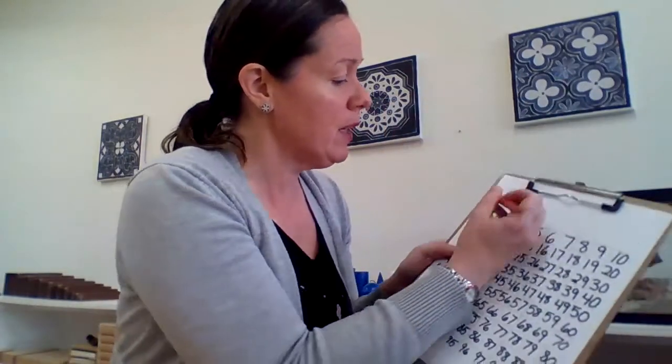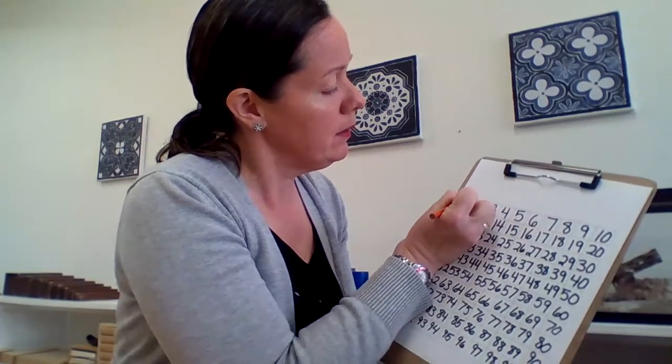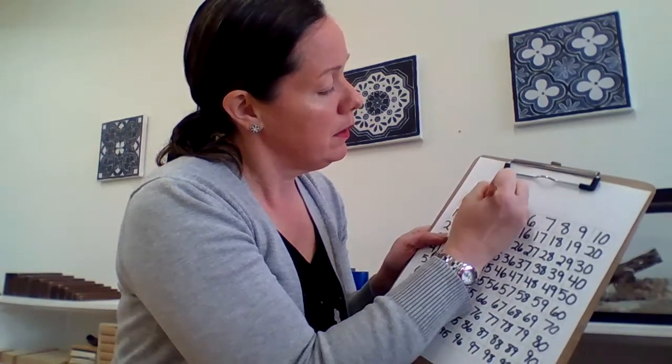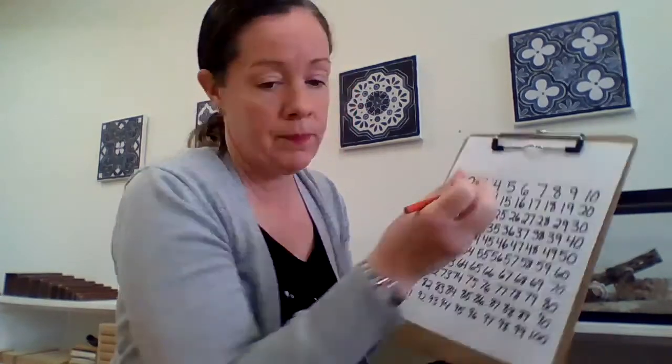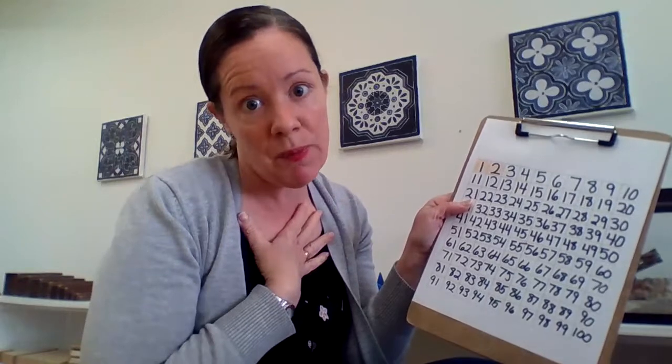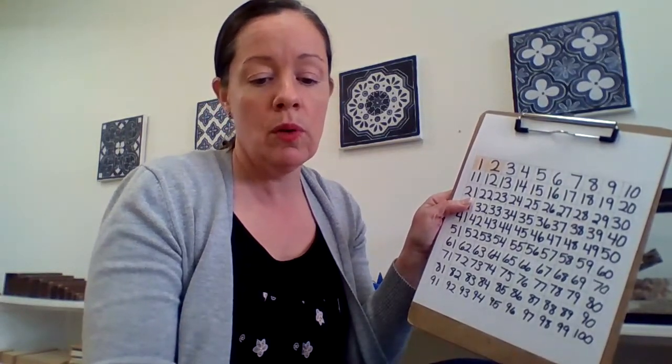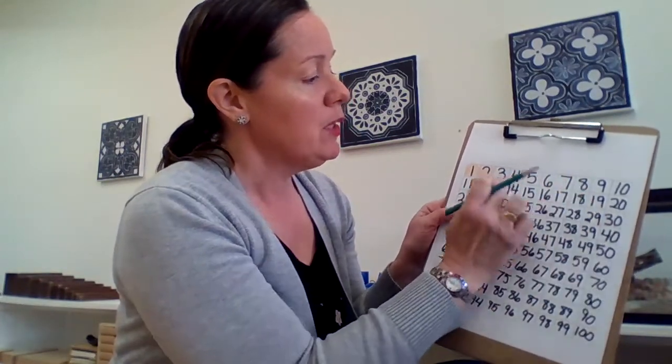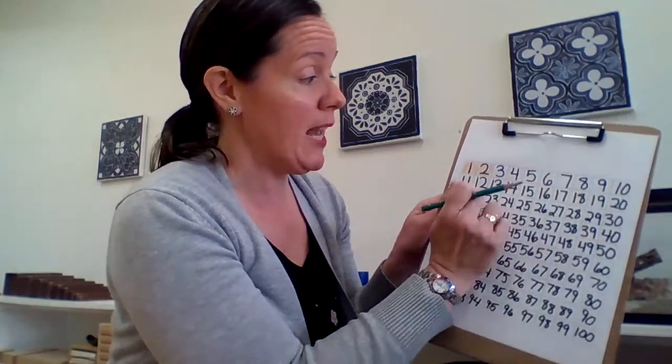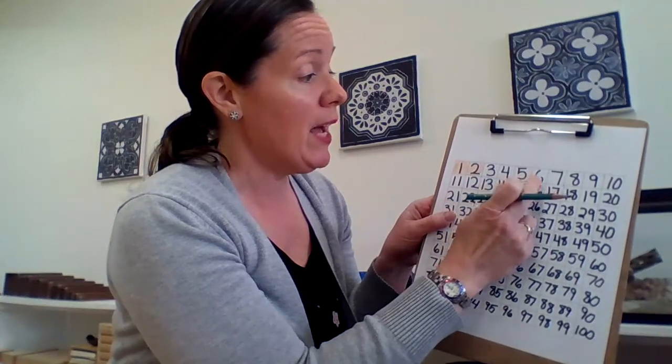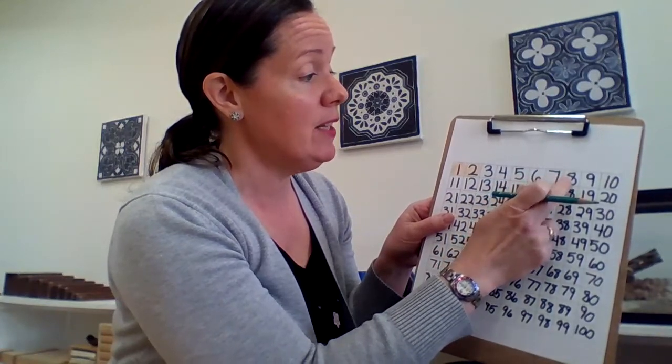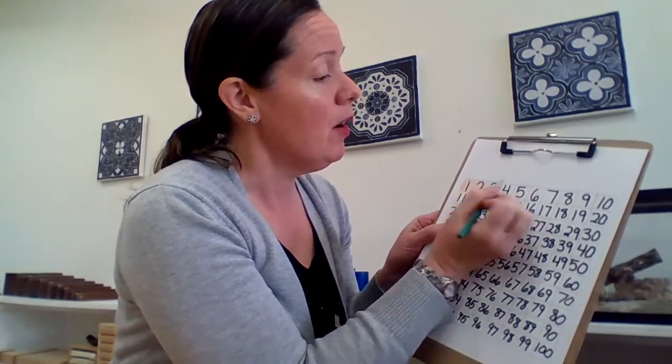Ooh, I rolled two. So I'm going to color in one, two. And now it's my friend's turn, but I'll just be my own friend because I don't have anyone else here right now. Ooh, six. So I have to go one, two, three, four, five, six more. So this person, my friend's going to count from three to eight. So three, four, five, six, seven, eight.